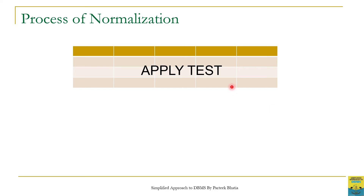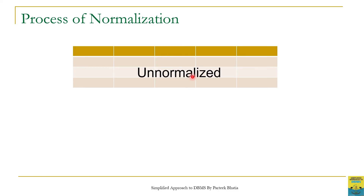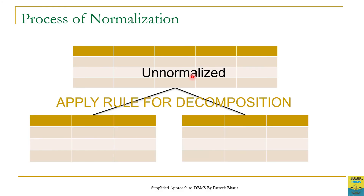To understand this process, let us consider a scenario. Here we have a table and we want to check whether it is normalized or not. In order to check this, we apply a test on this table. If the table satisfies that test it is considered normalized; if it is un-normalized, we have to apply the rule of decomposition and decompose the table into smaller tables.